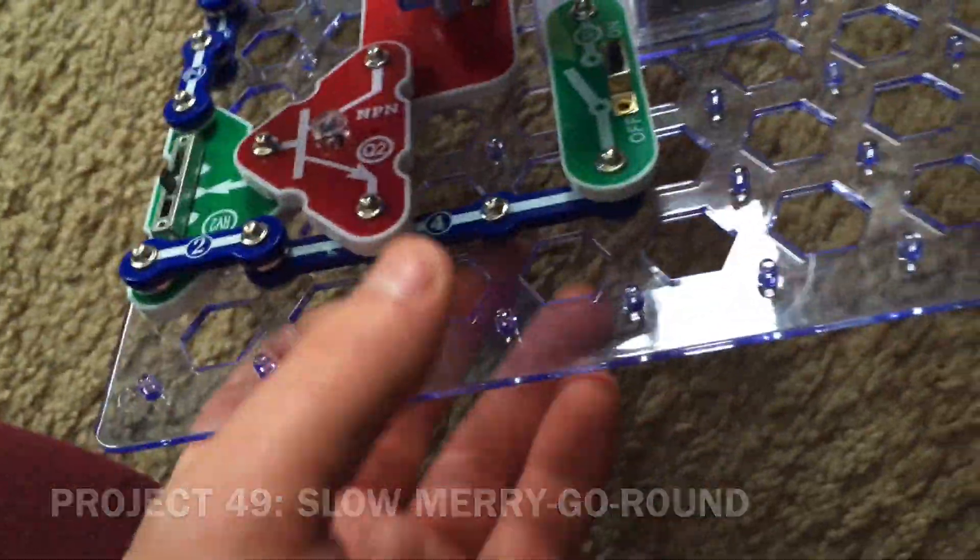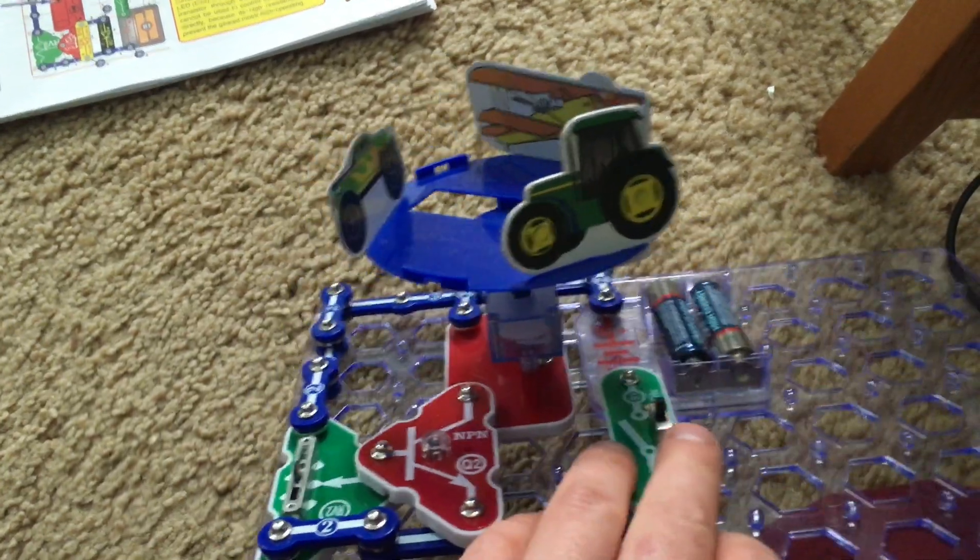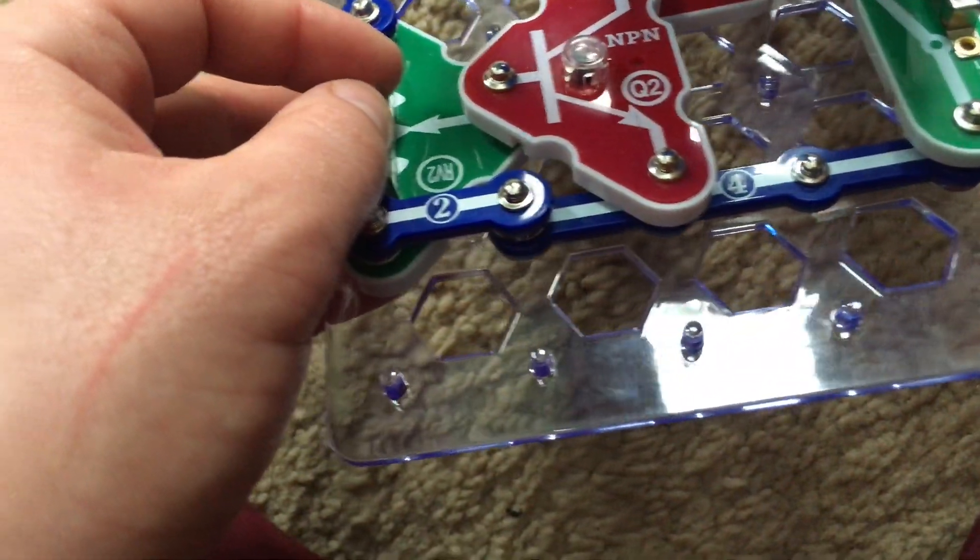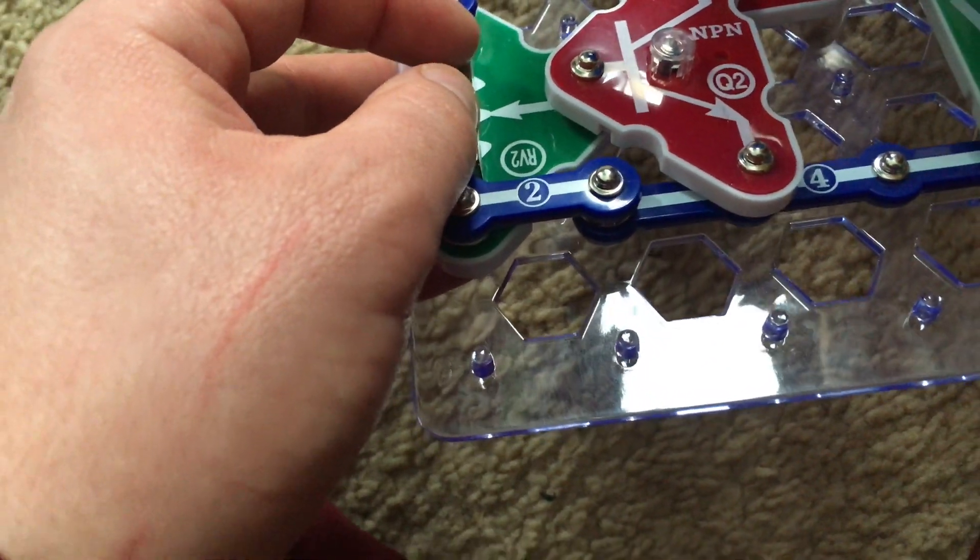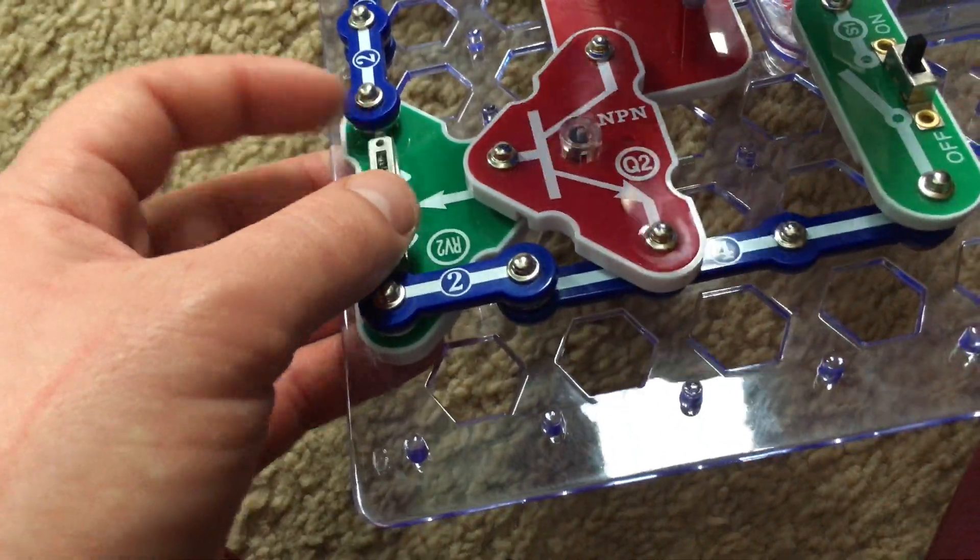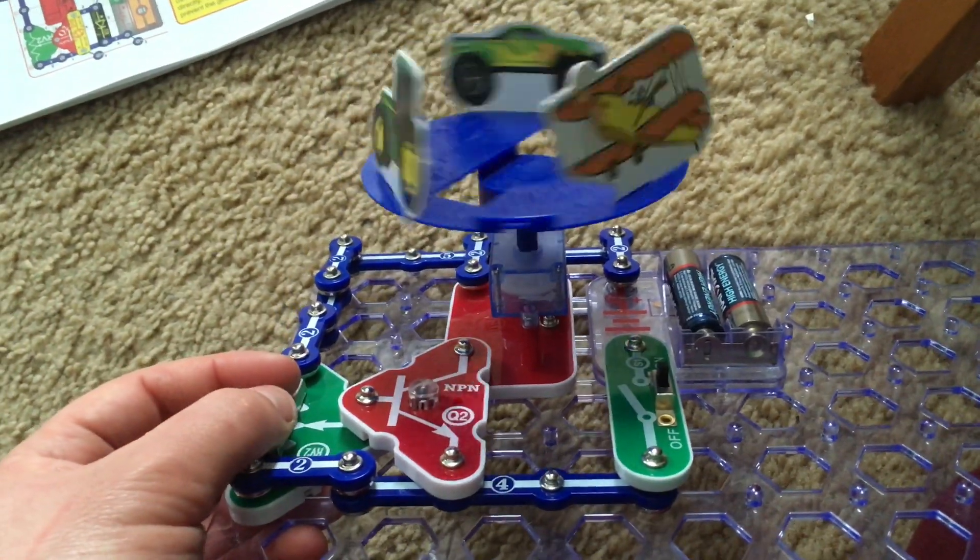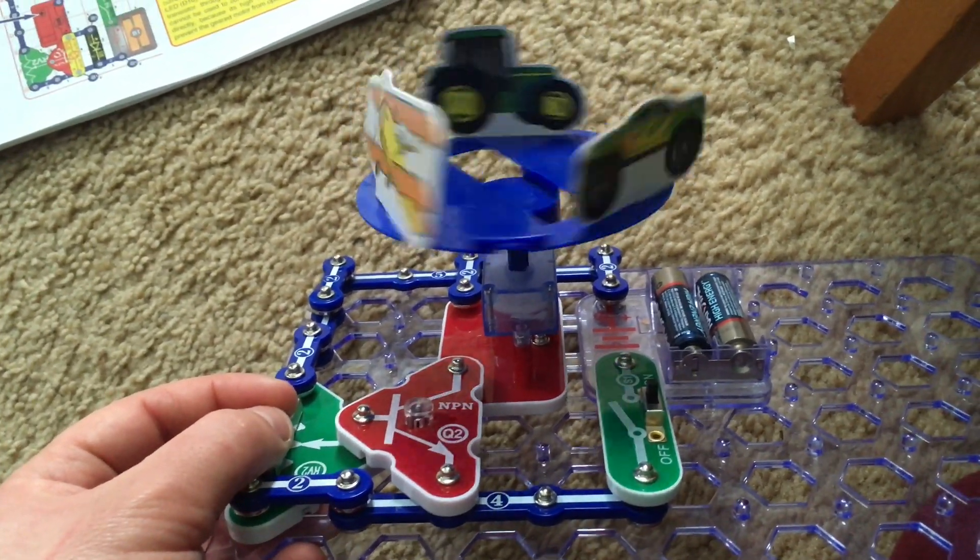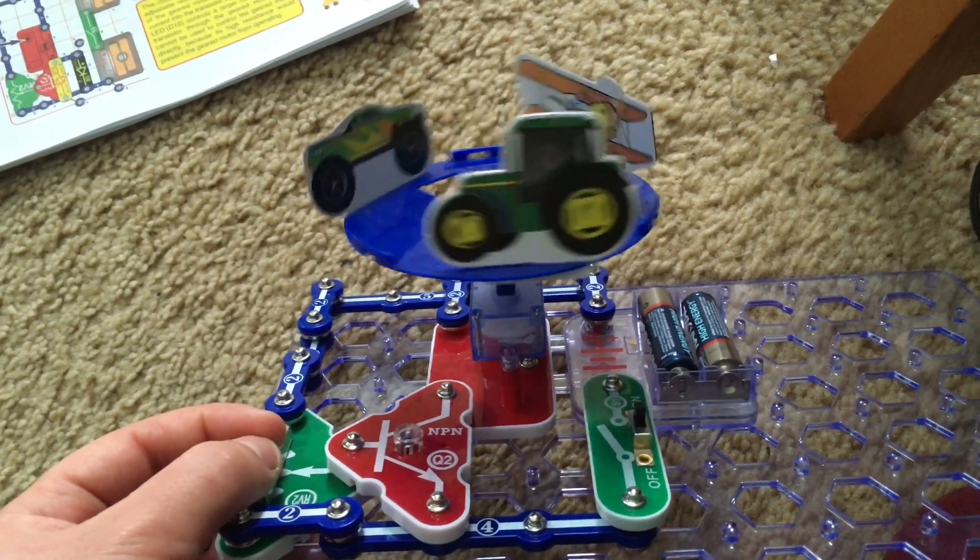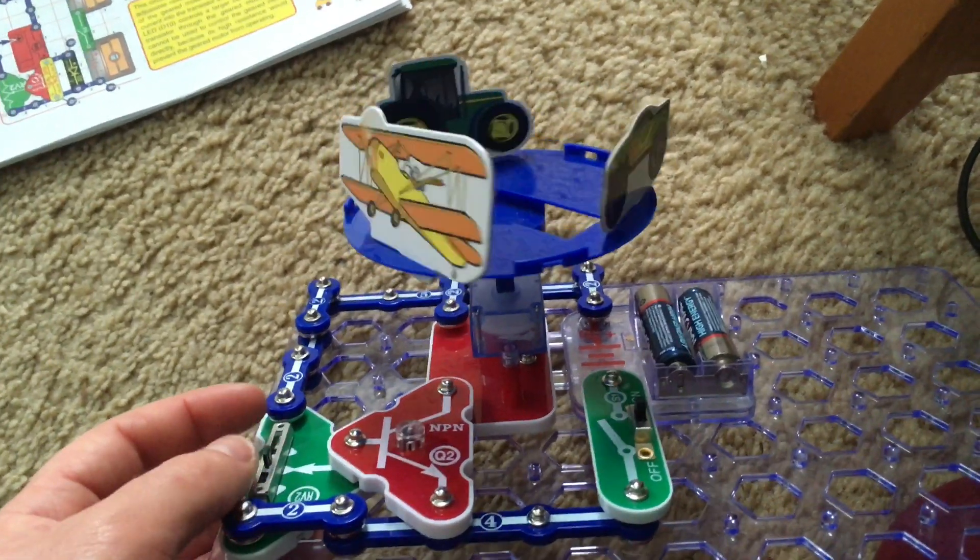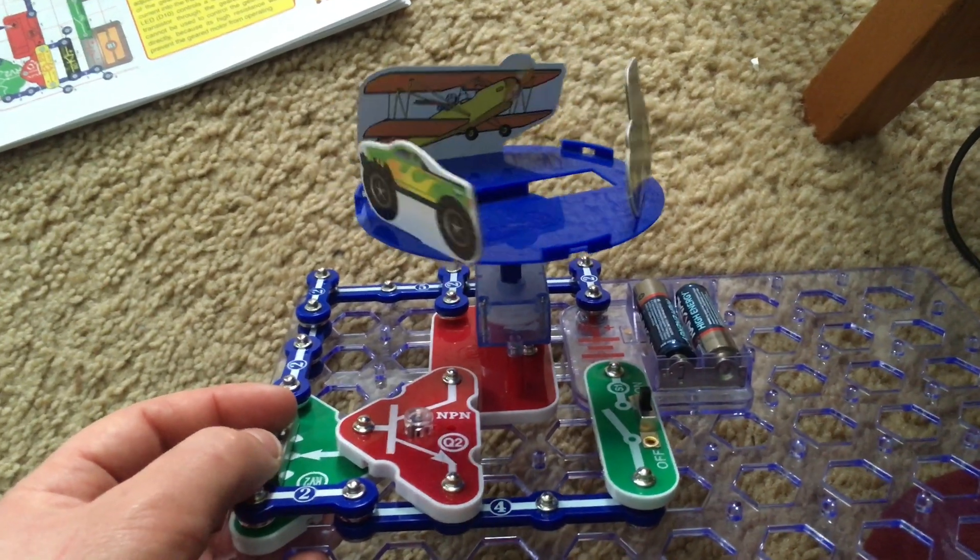This is going to be a slow merry-go-round. I'm going to turn on the slide switch and very slowly move the lever on the adjustable resistor. And the merry-go-round will spin. You can control its speed, but only over a narrow range on the RV.